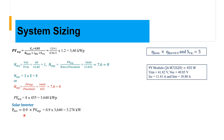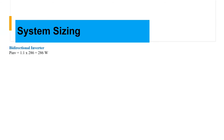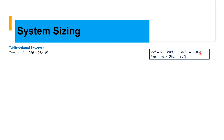Now we can size our solar inverter. The solar inverter is sized at 0.9 times the PV array, which gives us 3.276 kilowatts — within the recommended inverter sizing ratio of 0.9 to 1.2. Now let's size our bidirectional inverter, which is sized at 1.1 times 260 watts — the power of the essential loads — giving us an inverter size of 286 watts.